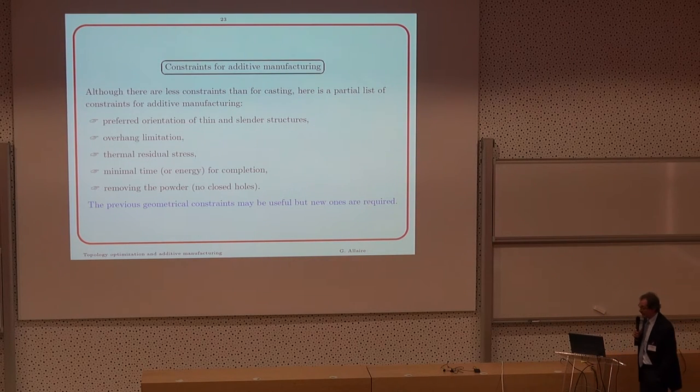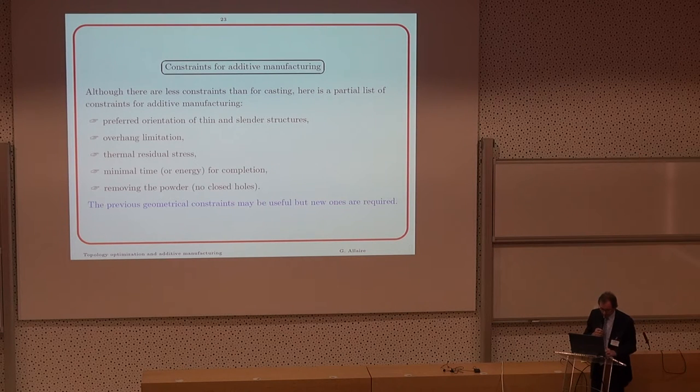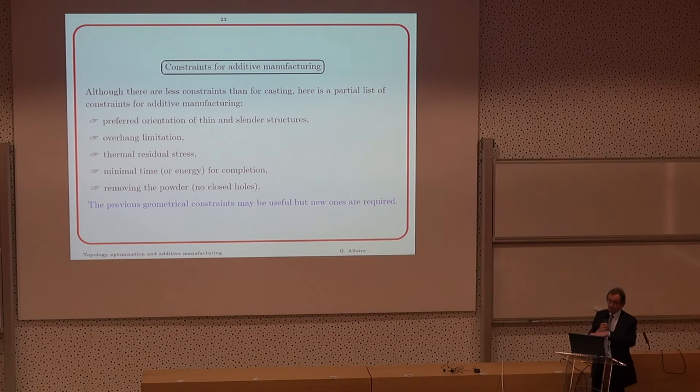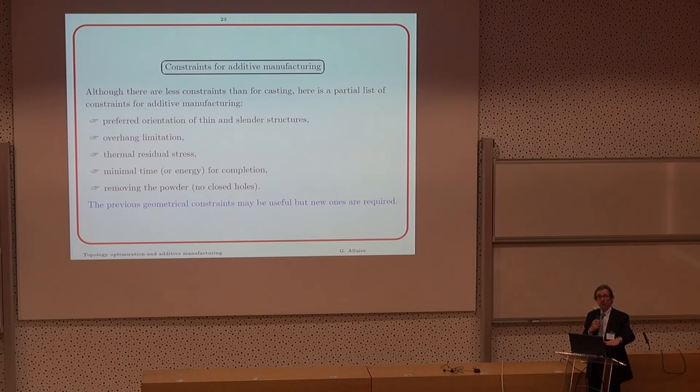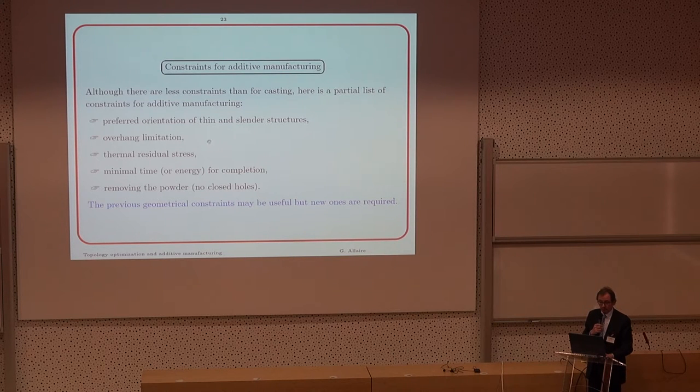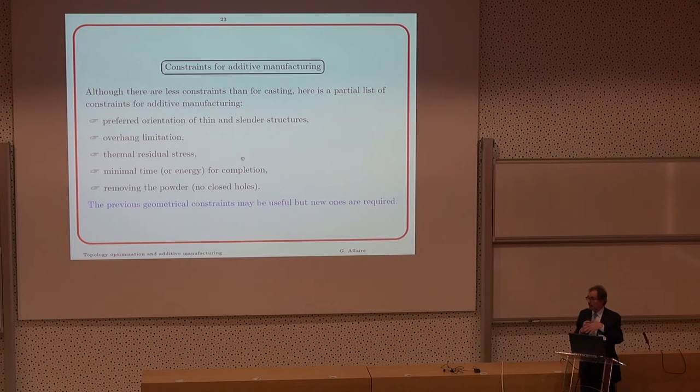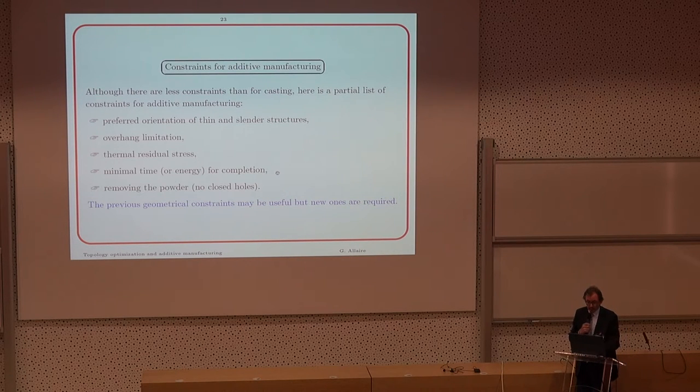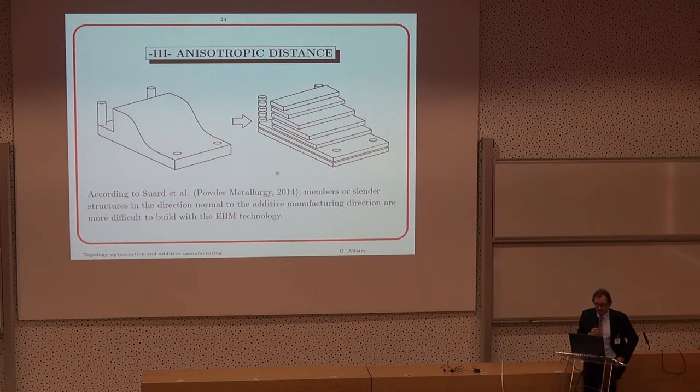Constraints for additive manufacturing. There are many of them. Here is a list of some of them, the ones that I know. Preferred orientation of thin or cylinder structures. It's known that if you build in a vertical direction, horizontal bars are a little bit more complicated to build than vertical bars. Overhang limitation - this was already discussed. Thermal residual stresses - very important. I have no computation here, but we are working on it. Minimal time for the trajectory of the laser or the electron beam when you build, because you don't want to spend too much energy. Removing the powder at the end of the process - no closed holes. The previous general constraints may be helpful, but they are clearly not enough.